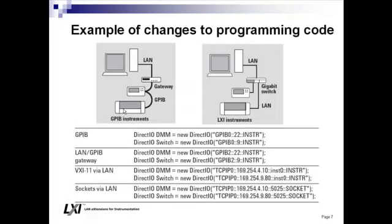Here are examples of changes you would need to make to your programming code. With GPIB, you have VISA designators — descriptors of how you actually talk to that instrument — and various I/O routines to configure communication. Whether moving from a gateway-operated GPIB subsystem or a direct GPIB subsystem to fully LAN-based instruments, you simply take those same VISA descriptors and substitute the equivalent descriptor for the LAN-based instrument.